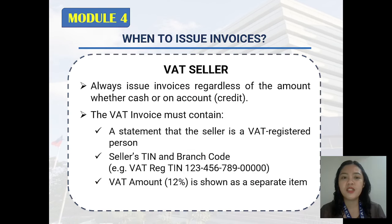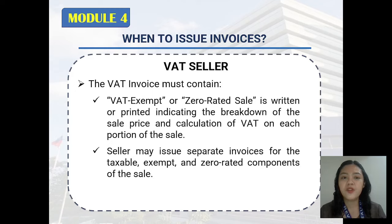For VAT sellers, they must always issue invoices regardless of the amount, whether cash or on account. The VAT invoice must contain a statement that the seller is a VAT registered person, the seller's TIN and branch code, and the VAT amount shown as a separate item. For VAT exempt or zero-rated sales, it must be written or printed indicating the breakdown of the sale price and calculation of VAT on each portion of the sale. The seller may issue separate invoices for the taxable, exempt, and zero-rated components of the sale.